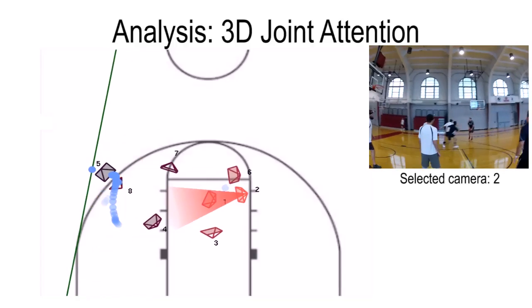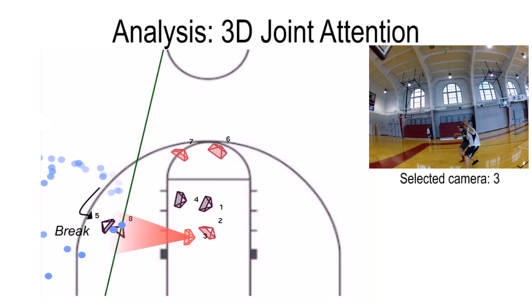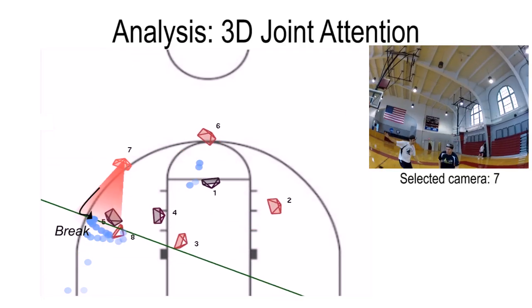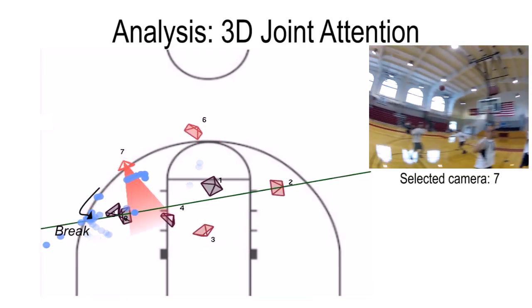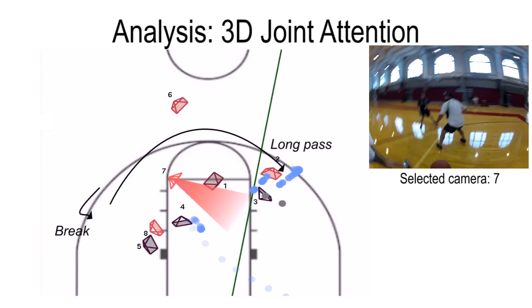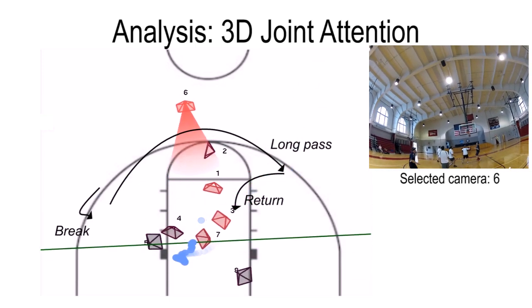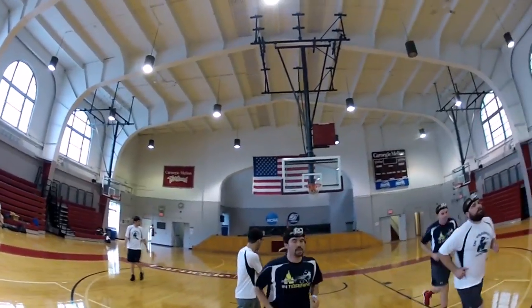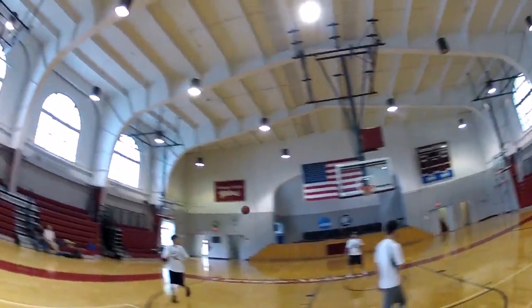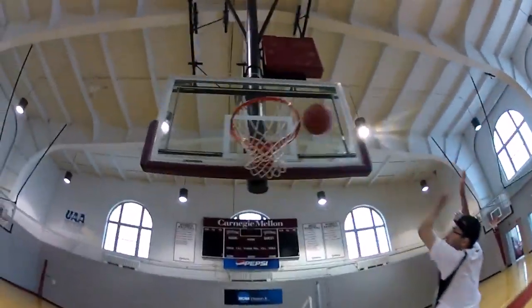Here, the 3D joint attention captures the quick break, the long pass, and the short return as well. The algorithm automatically identifies the post-basket dribbling as a good area to remove, and we fade directly into the next attack of the white team.